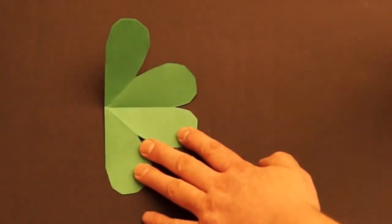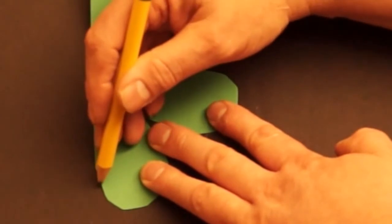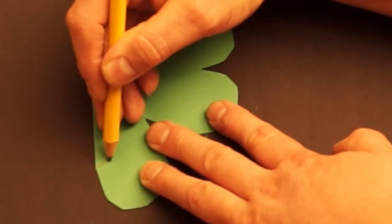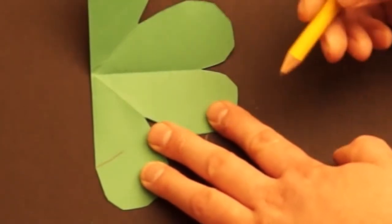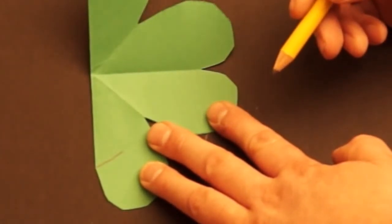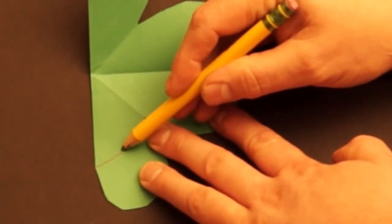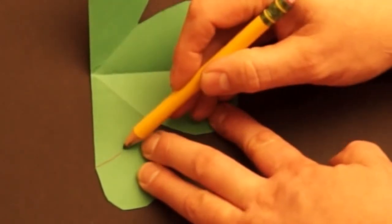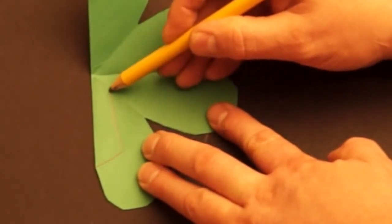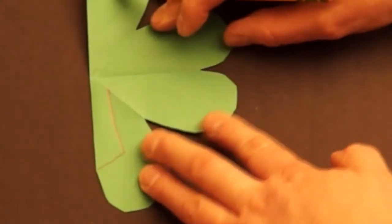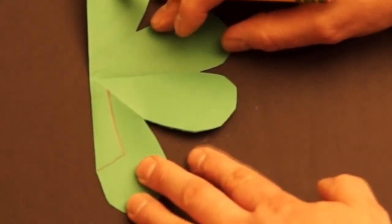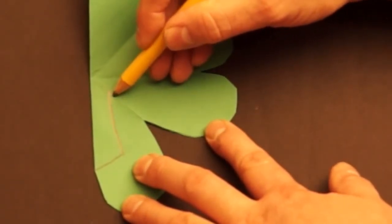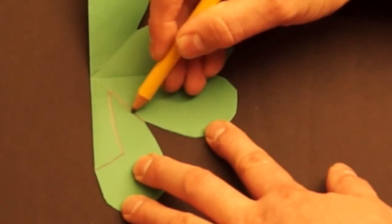Now we're going to take our pencil. And where this straight edge meets the curve, or starts the curve, we're going to draw a line that slants up towards the right, about that far. Then from the end of that line, we're going to draw a slanted line up to where this crease is right here. And then we're going to start at the end of this line and draw along the crease until you get to the outside edge.